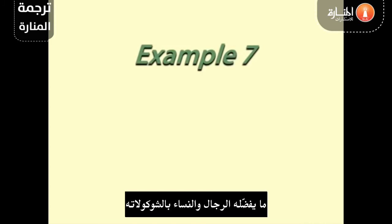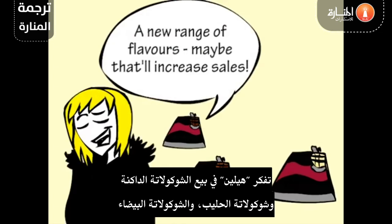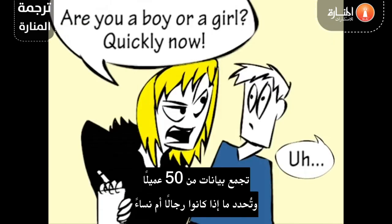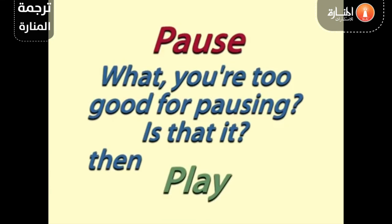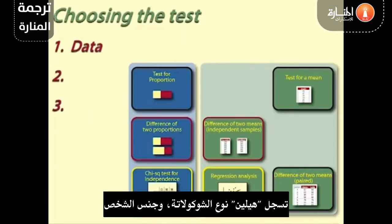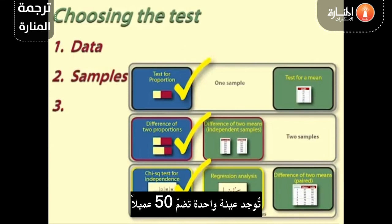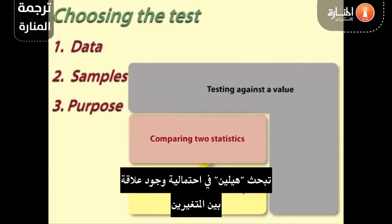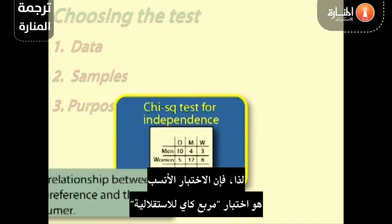Example 7: Men and women and chocolate preference. Helen is thinking of selling dark chocolate, milk chocolate and white chocolate choc-a-nutties. She thinks that men and women might have different preferences with regard to type. She collects data from 50 customers, noting down if they are men or women and asking them which variety they prefer. 1. Data: Helen records the type of chocolate and sex of person — these are both nominal variables. 2. Samples: There is one sample of 50 customers, but with two measures or variables. 3. Purpose: Helen is looking at whether there is a relationship between the two variables. Thus, the test is chi-squared test for independence.